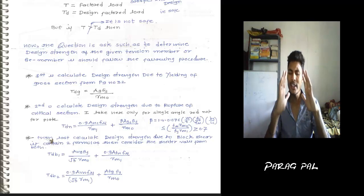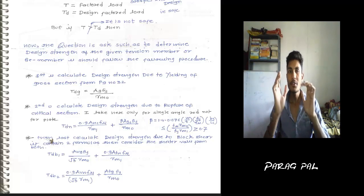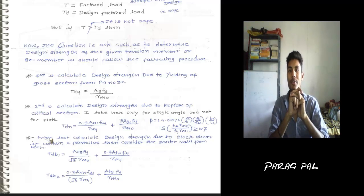In every numerical, you have to design the TD. You have to determine the design factored load, which is safe. I use the relation: if it is not safe, then your design strength is not good. This is wrong, this is not safe. Always, the relation is T is less than or equal to TD. The question asks to determine the design strength of the given tension member or TIE member. You should follow the following procedure.